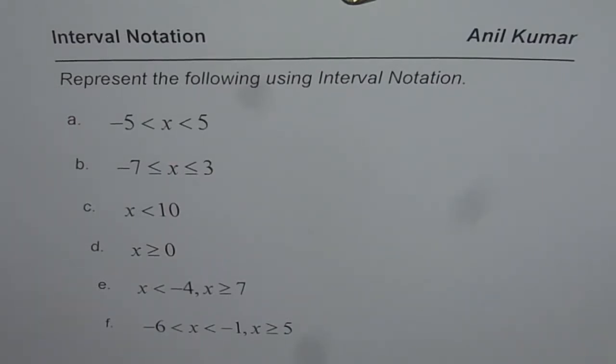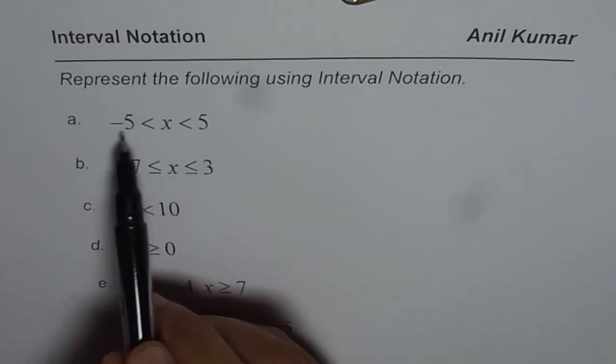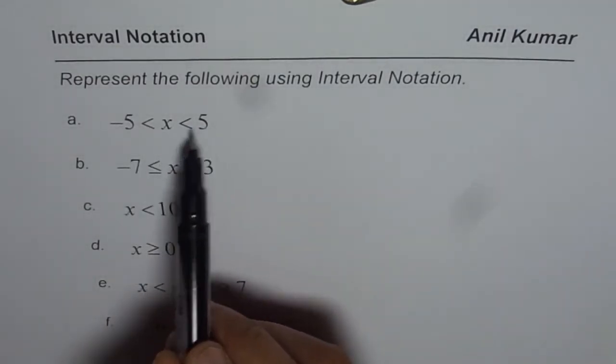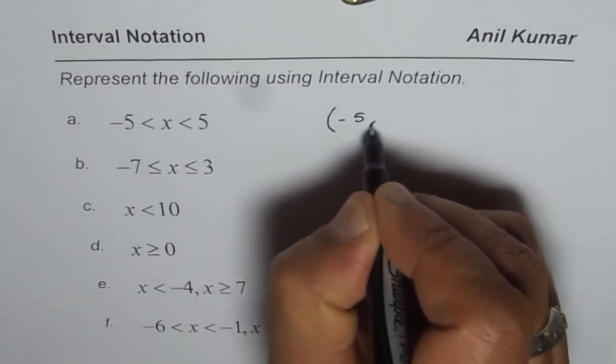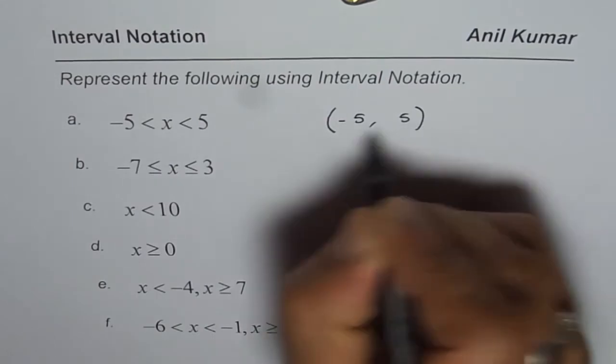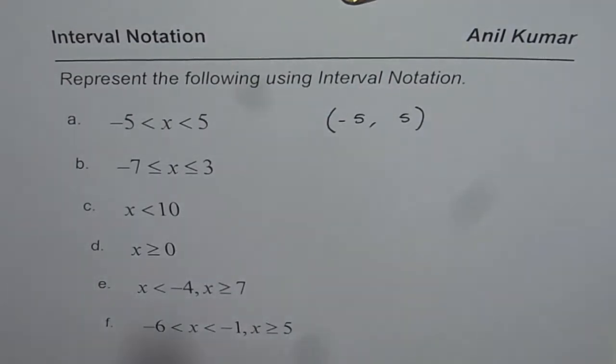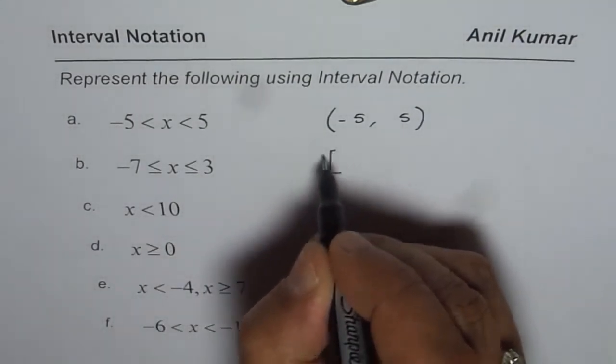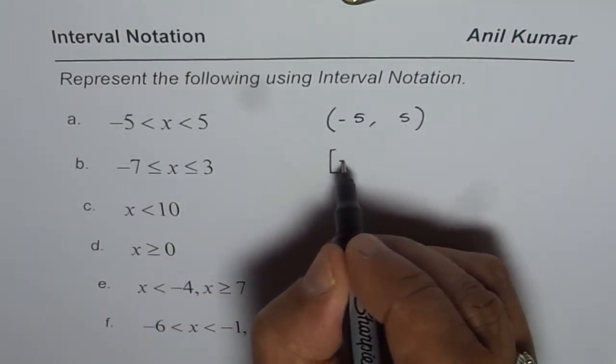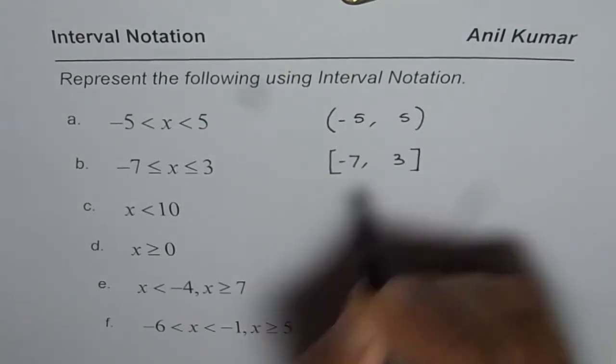Here is the solution. When I say x is between minus 5 and 5, where both are not included, we'll write it as minus 5 to 5, both not included. In the second case, minus 7 and 3 are included, and therefore, we'll use the square brackets.